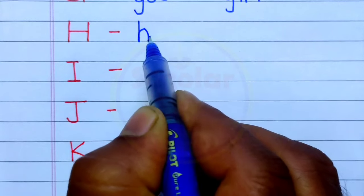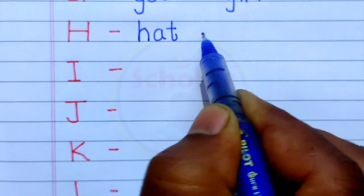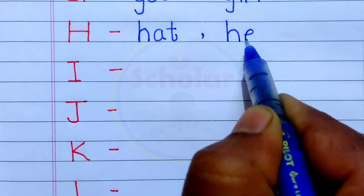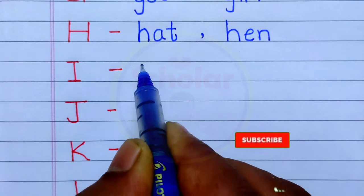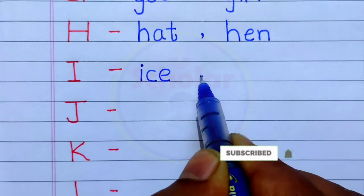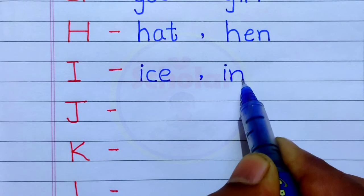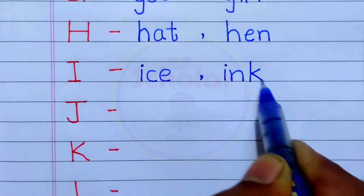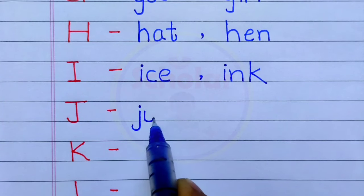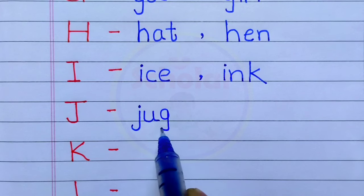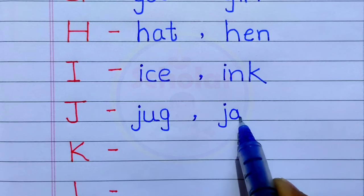H - Hat, Hen. I - Ice, Ink. J - Jug, Jar.